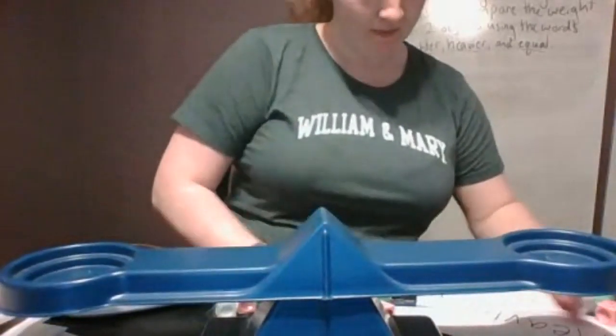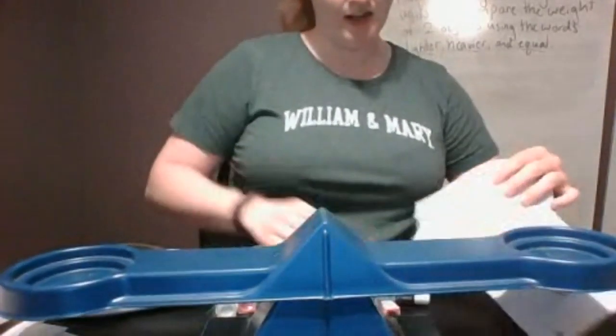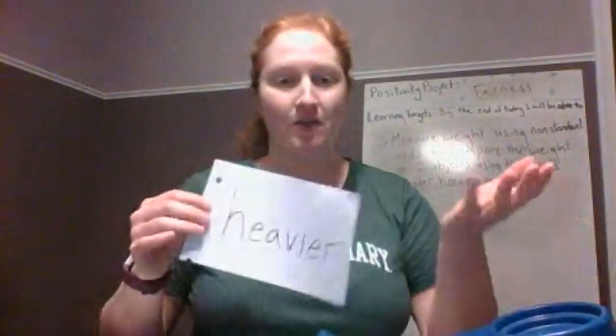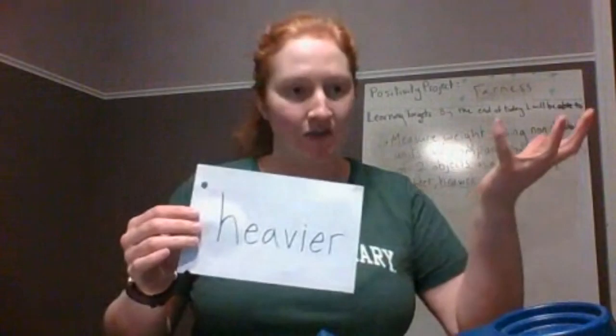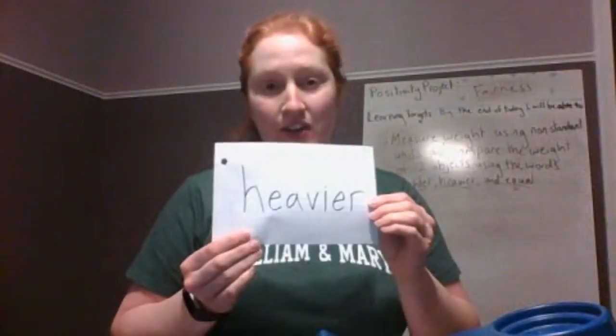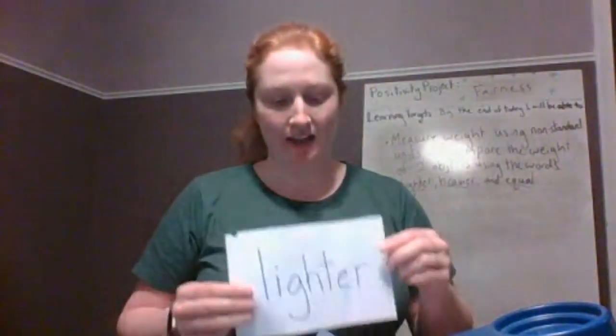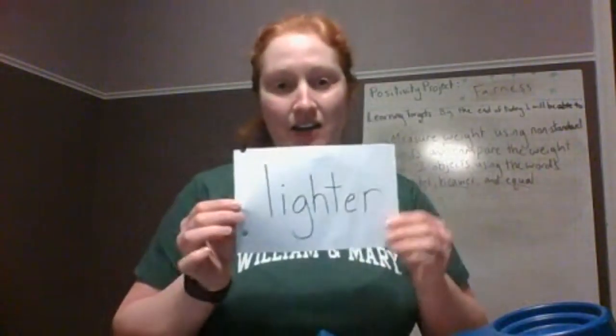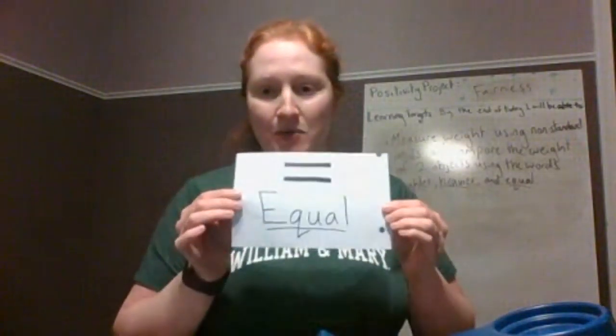Today we learned some new words that help us measure weight. We learned the word heavier — if something makes the scale go down or your hand needs to drop, that thing is heavy or heavier than something else. If something's really easy to hold, it's called light, and something could be lighter than something else — if the scale goes up, it means it's lighter. And sometimes when the scale is balanced, we use the word equal.